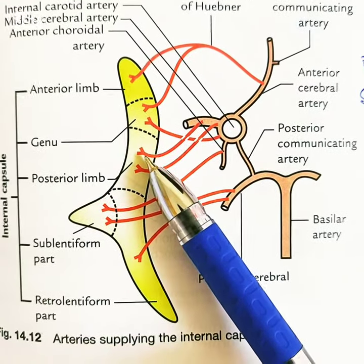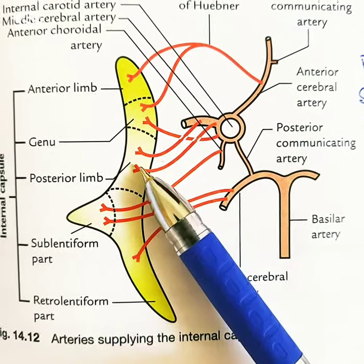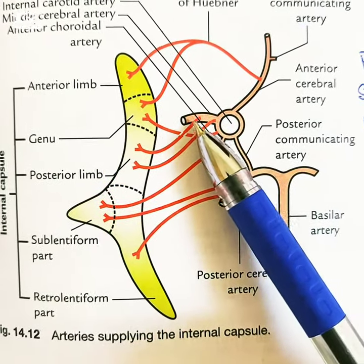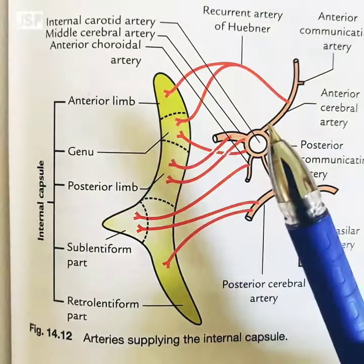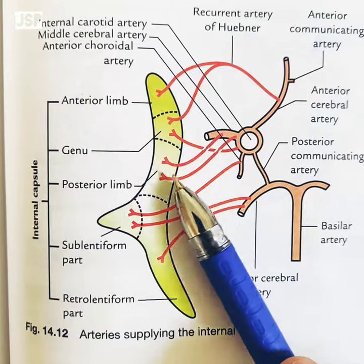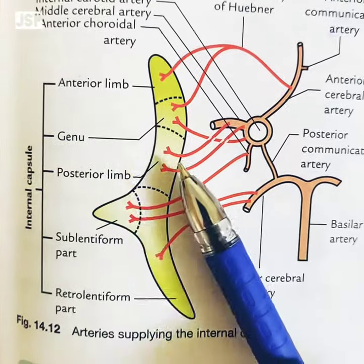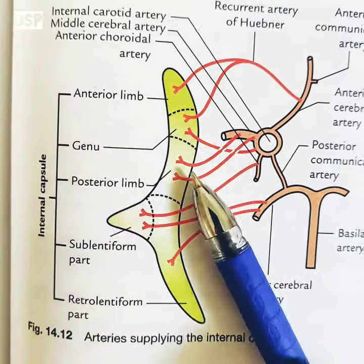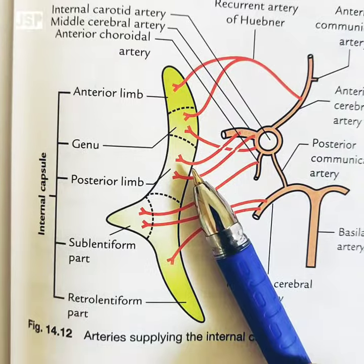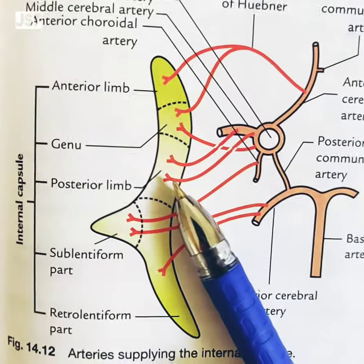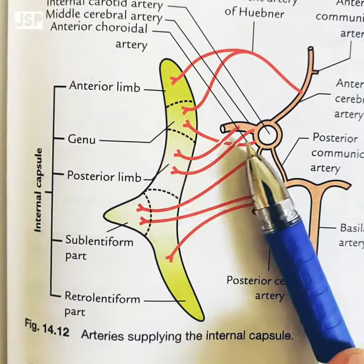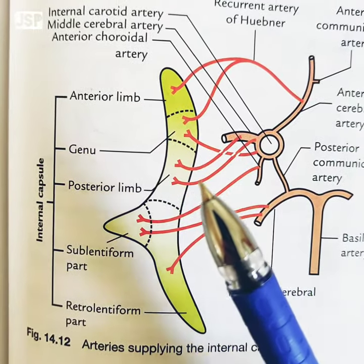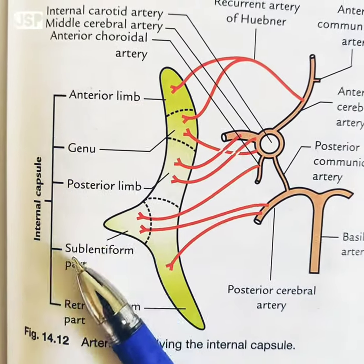The posterior limb is supplied by the middle cerebral artery via two branches: medial striate branches and lateral striate branches. The lateral striate branch is more prone to ischemic damage, and is therefore called the artery of cerebral hemorrhage, also known as Charcot's artery.